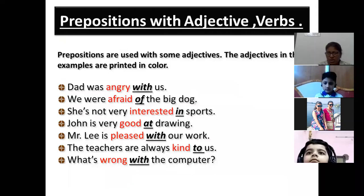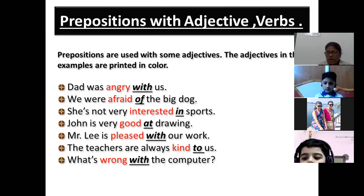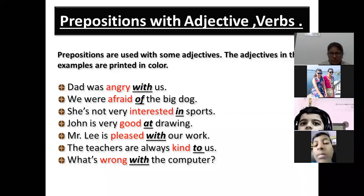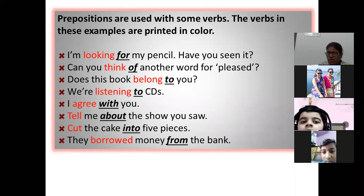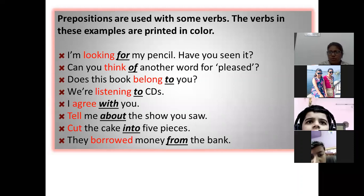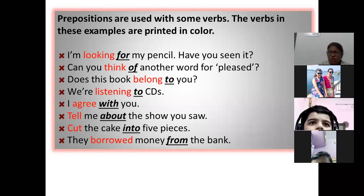Prepositions can be used with adjectives and verbs. Adjectives are describing words and verbs are action words. For example: Dad was angry with us — 'angry' is an adjective. John is very good at drawing — 'good' is an adjective. With verbs: I am looking for my pencil — 'looking' is a verb. Can you think of another word for pleased — 'think' is a verb. I agree with you.